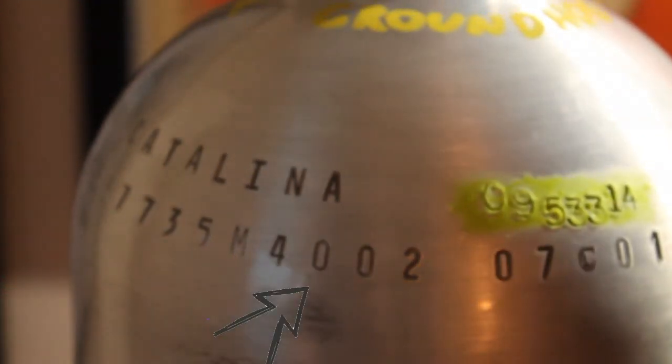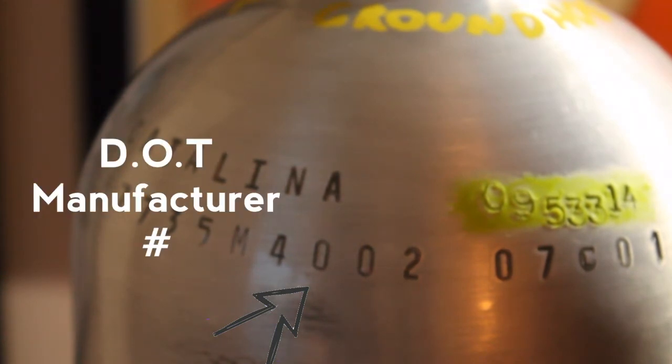So the next bit of information, the M4002 here, this is the manufacturer number that is issued by the Department of Transportation, the DOT for Catalina, that recognizes this cylinder or their cylinders.